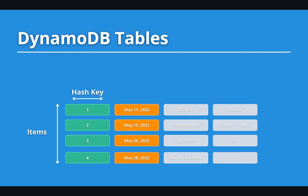DynamoDB uses hash keys internally to determine the physical partition where to save the actual data. It is also a super important property because we have to use it in our queries. Another must-know property is the sort key, sometimes called a range key — those two names are used interchangeably. The sort key is used internally by DynamoDB to sort items with the same hash key, and it's also useful in queries. The hash key and sort key together create the primary key of the item.